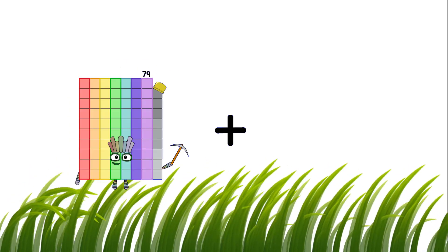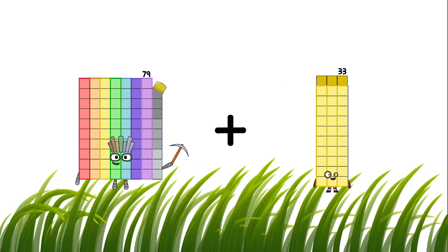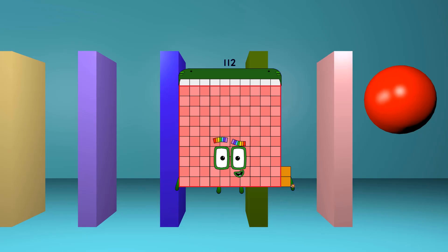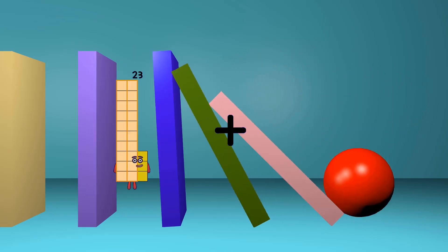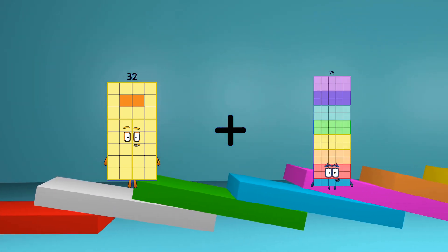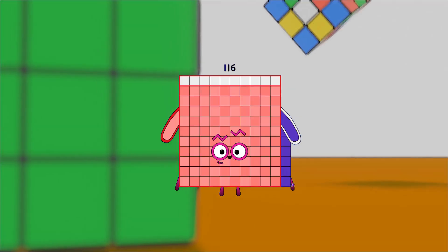79 loss 33 equals 112. 32 loss 84 equals 116.